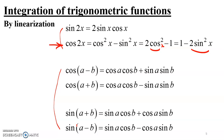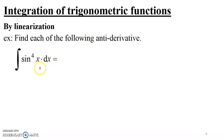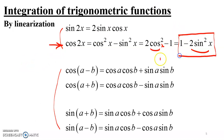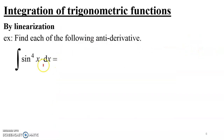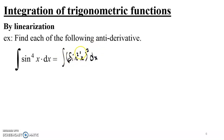Now let's see how linearization actually works with the first example. For the integral of sine to the fourth x, we use the double angle identity: cosine 2x equals 1 minus 2 sine squared x. Inside that identity, sine is squared, but in our integral it's to the fourth power. Since a power of four involves two squares, we rewrite it as the integral of (sine squared x) all squared dx.